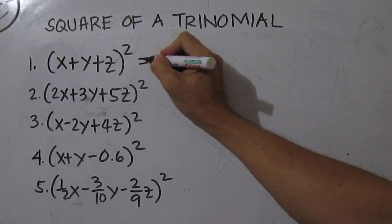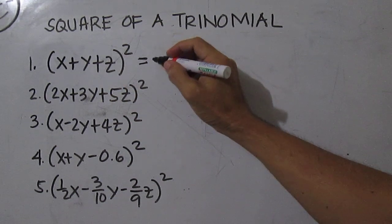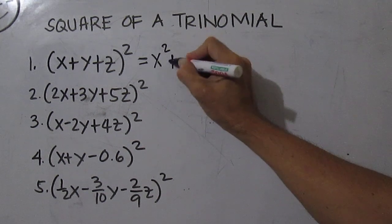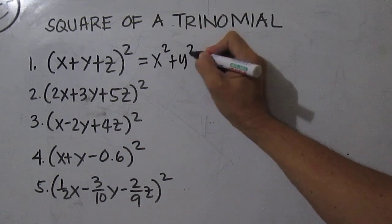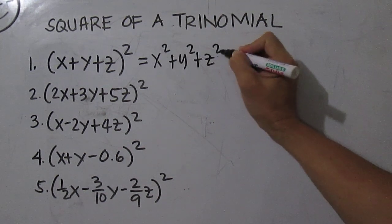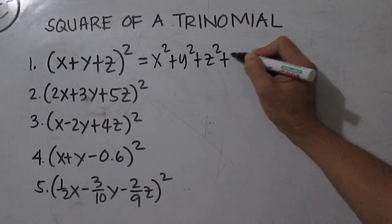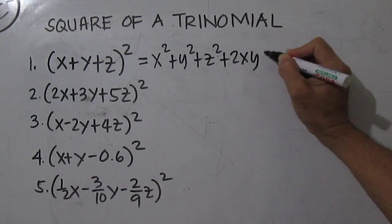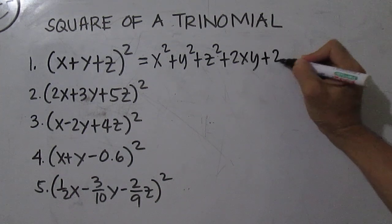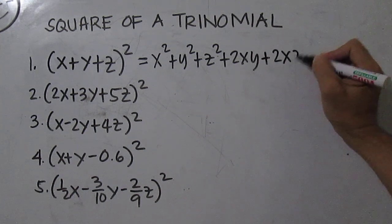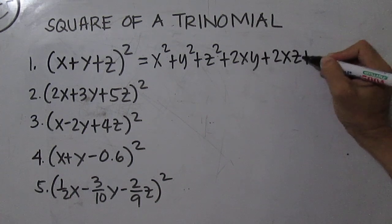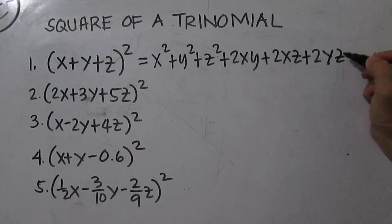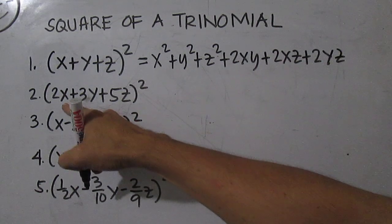this is equal to x squared plus y squared plus z squared plus 2xy plus 2xz plus 2yz.